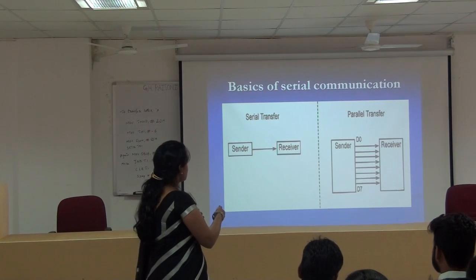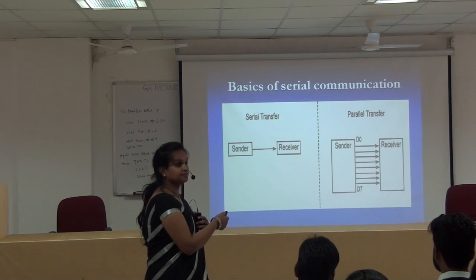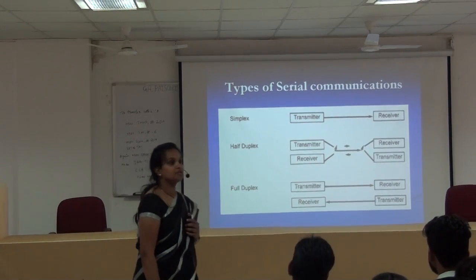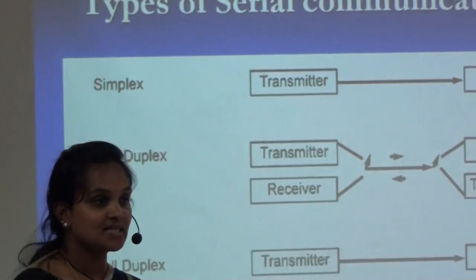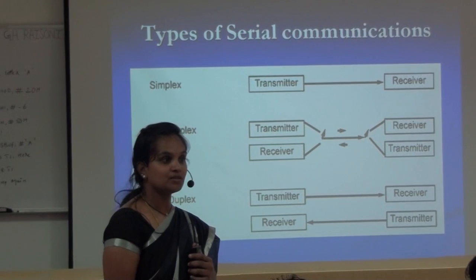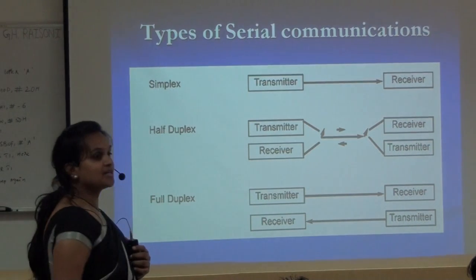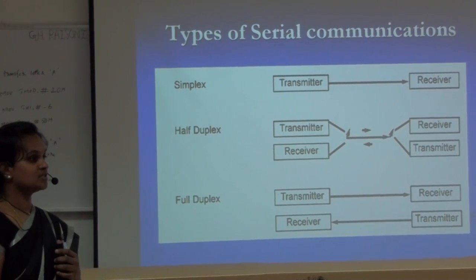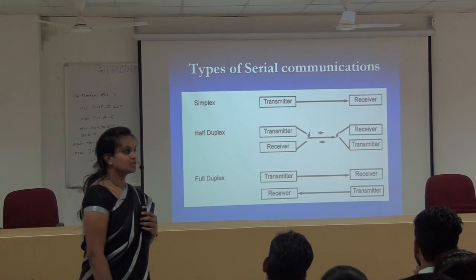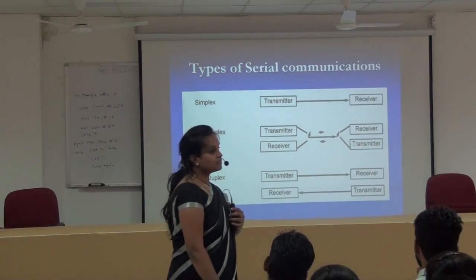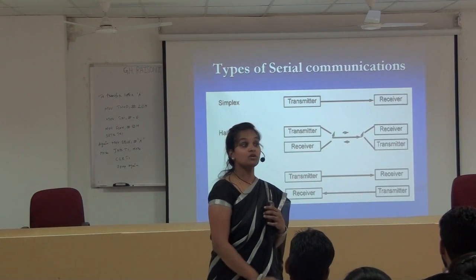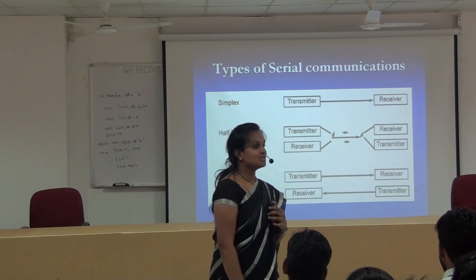How many types of serial communication are there? Simplex, half duplex, and full duplex. What is simplex? One way communication. Half duplex means you can communicate from transmitter to receiver and receiver to transmitter, but not simultaneously.